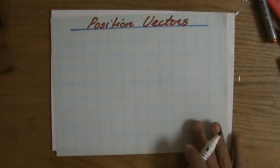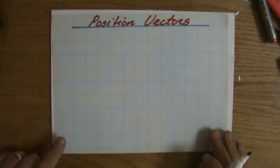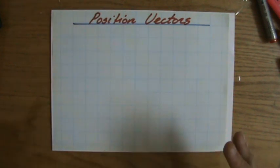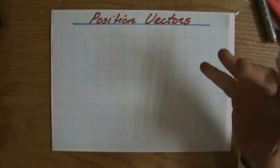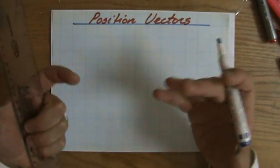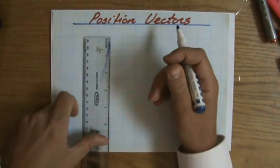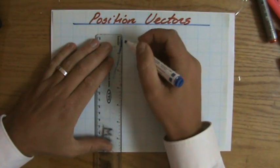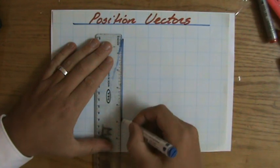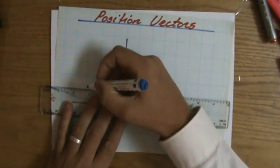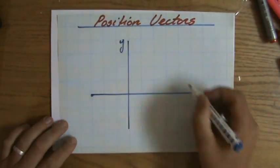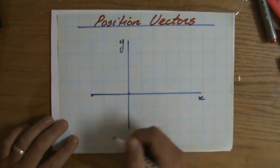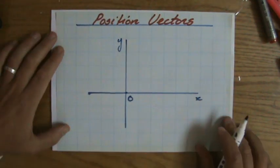I just have one video regarding position vectors for you because it's quite simple. Position vectors are points relative to a fixed point, or if you like, vectors relative to a fixed point. Usually you'll get some sort of y and x axis. Let me quickly draw that for you. There you go, that's the y and the x.